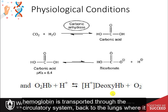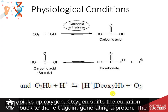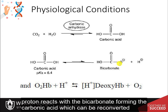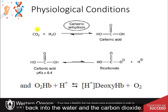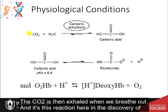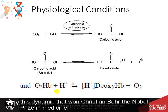Deoxyhemoglobin is then transported through the circulatory system back to the lungs, where it picks up oxygen. Oxygen shifts the equation back to the left, generating a proton. The proton then reacts with bicarbonate, forming carbonic acid, which is reconverted into water and carbon dioxide. The carbon dioxide is then exhaled when we breathe out. It is this reaction and the discovery of this dynamic that won Christian Bohr the Nobel Prize in Medicine.